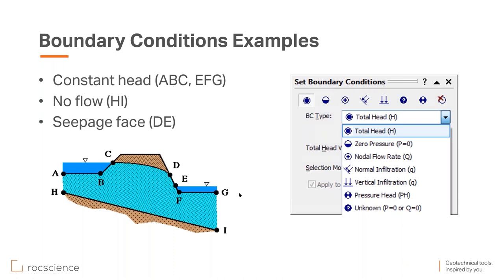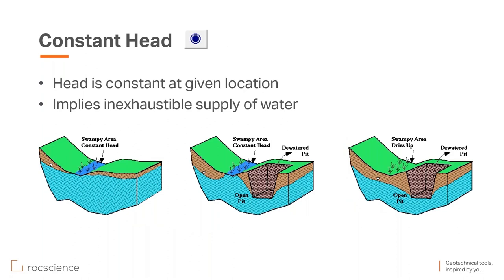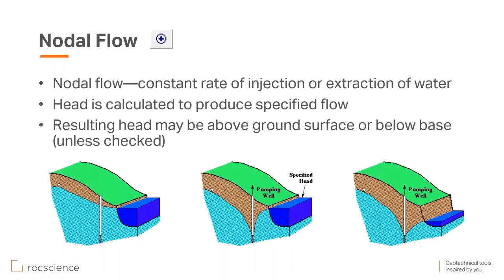Total head means you have a constant head at a given location — implying an inexhaustible supply of water. If you have a swamp or river, you can assign a total head boundary condition at its base. Even if you are excavating a pit nearby and dewatering, if the water table stays the same in the swamp or river, you can still apply total head. However, if the dewatering rate is such that the swamp dries up, you no longer have constant head there. Nodal flow is a constant rate of injection or extraction, and the head is calculated to produce that specific flow at the specified node.